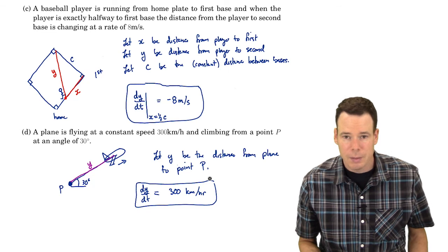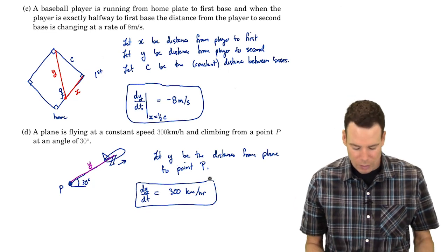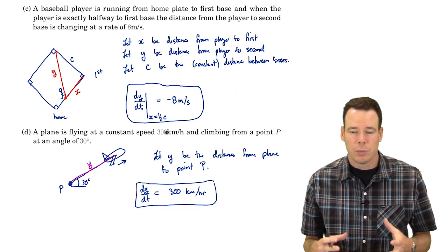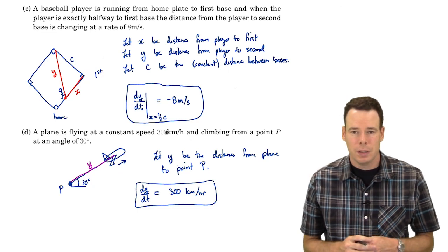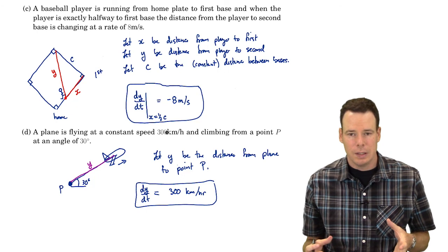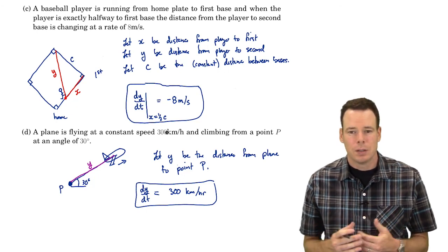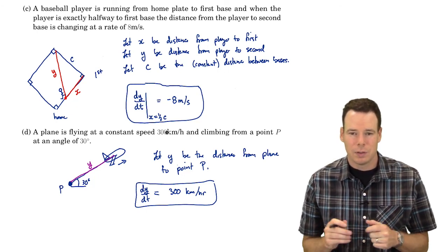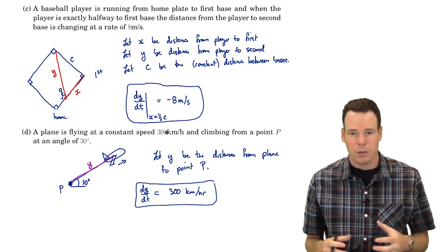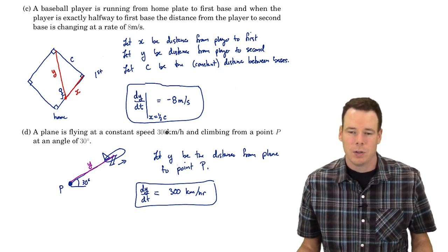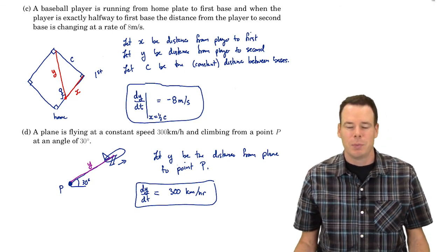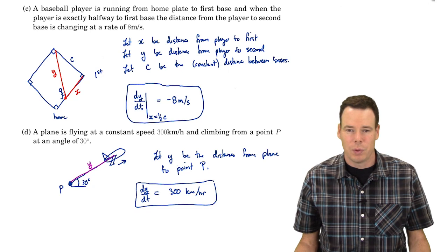These examples illustrate that when given a rate of change in a question, we can interpret it as the derivative of a quantity. First we declare what the quantity is, then we specify whether the derivative is positive or negative, depending on whether the quantity's value is increasing or decreasing at that rate. Now we'll move on to the third thing we'll need when solving related rates problems.